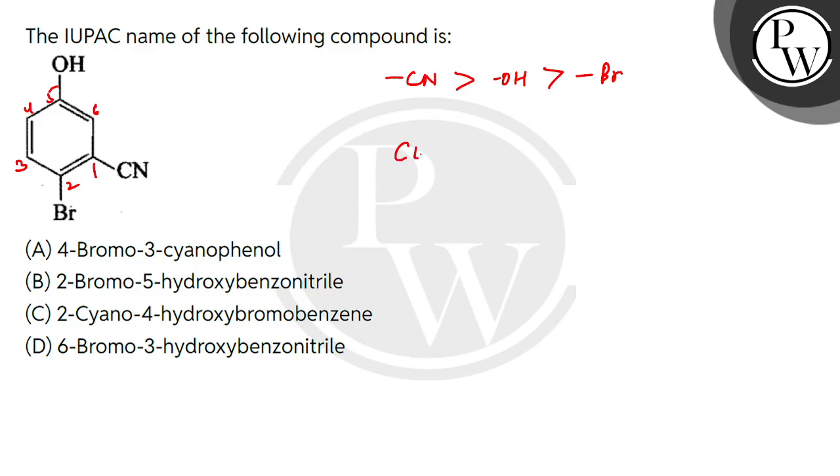Clockwise numbering is clockwise numbering. What will we get? CN is always 1 because it is the highest priority. Let's see Br and OH. Br gets locant 2 and OH will get 5 locant.